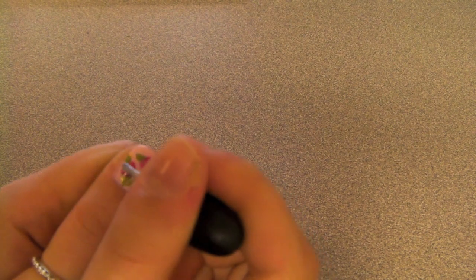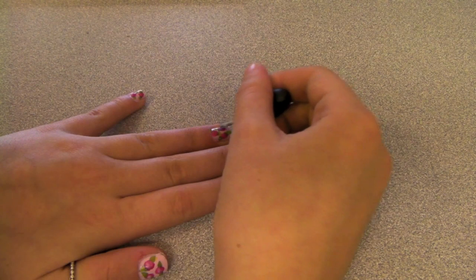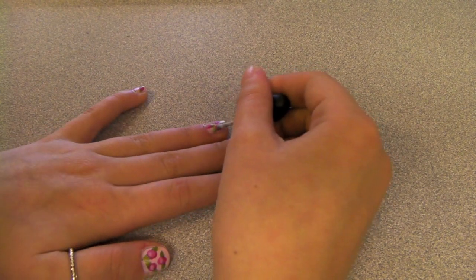Now take the same light pink color you used for the base of your nails and lightly dab it onto each polka dot. This adds a bit more contrast and makes the flower look really pretty.